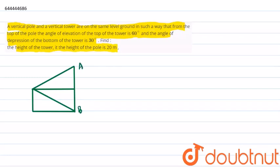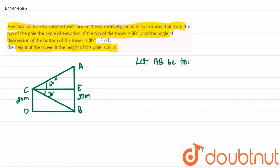We will take AB as the height of the tower and CD as the pole, marking a point E. We have been given that the angle of elevation is 60 degrees and the angle of depression is 30 degrees. The height of the pole is 20 meters, so similarly EB becomes 20 meters. Let AB be the tower and let CD be the pole.